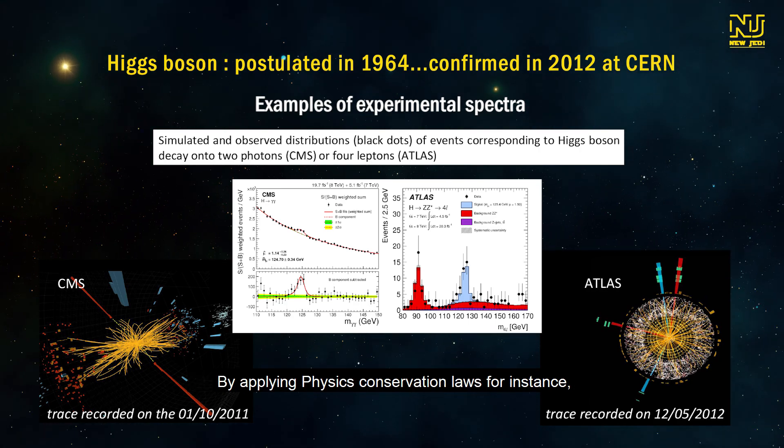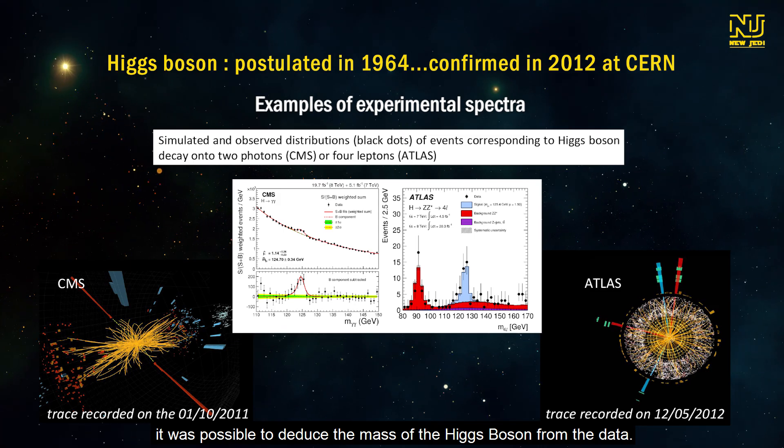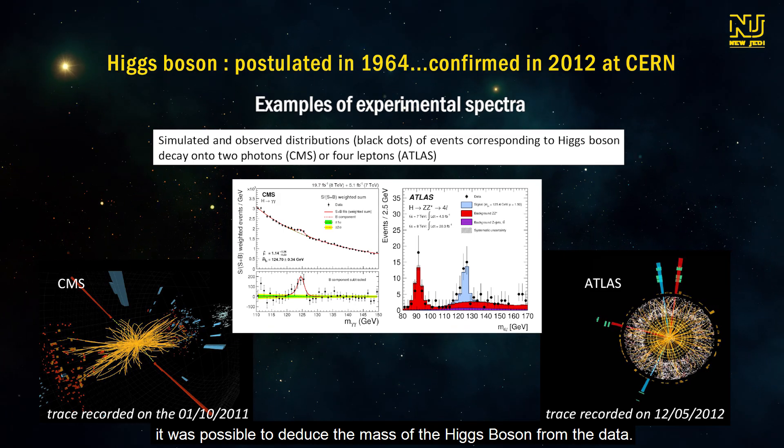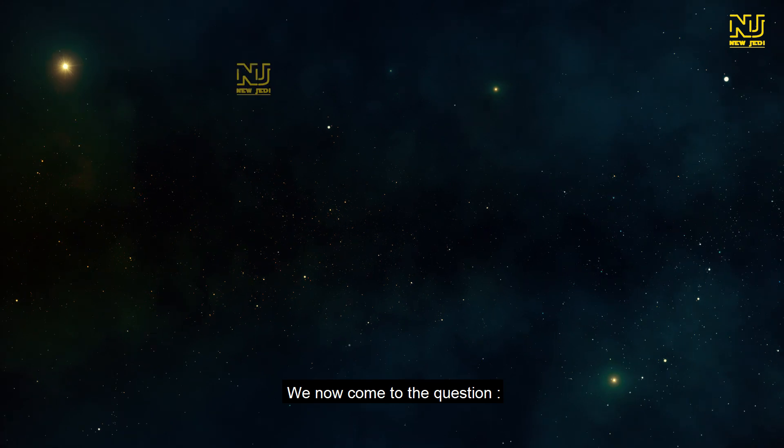By applying physics conservation laws, for instance, it was possible to deduce the mass of the Higgs boson from the data.